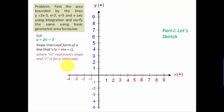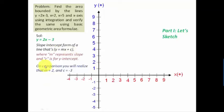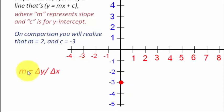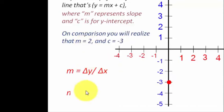Comparing y equals 2x minus 3 with y equals mx plus c, we find that m equals 2 and c equals minus 3. The y-intercept is minus 3, so we start from that point on the y-axis. The slope m equals 2 can also be written as 2 over 1, meaning delta y corresponds to 2 units and delta x corresponds to 1 unit.